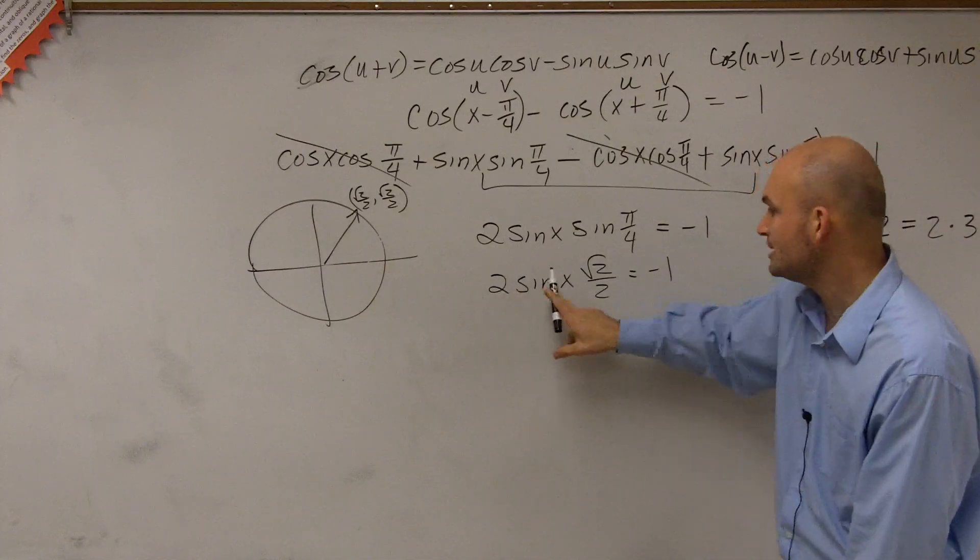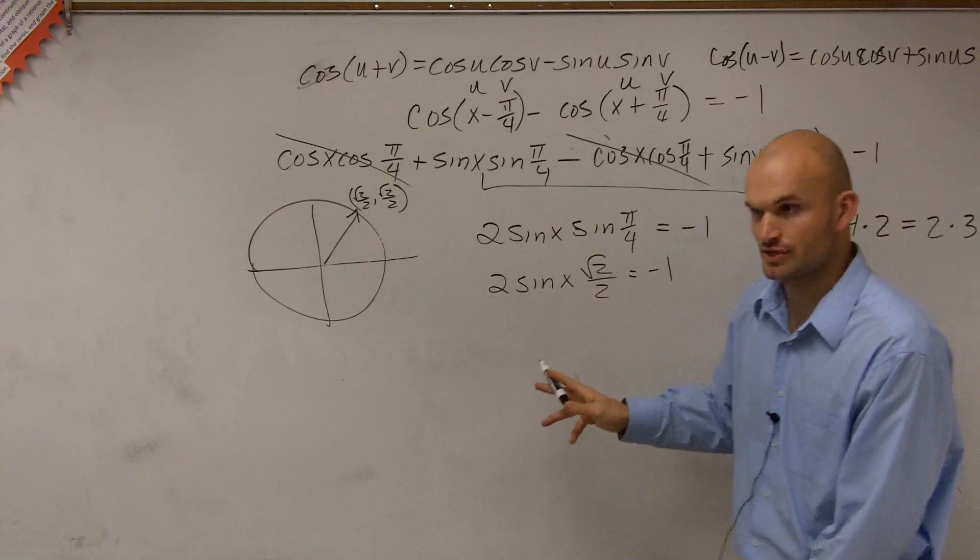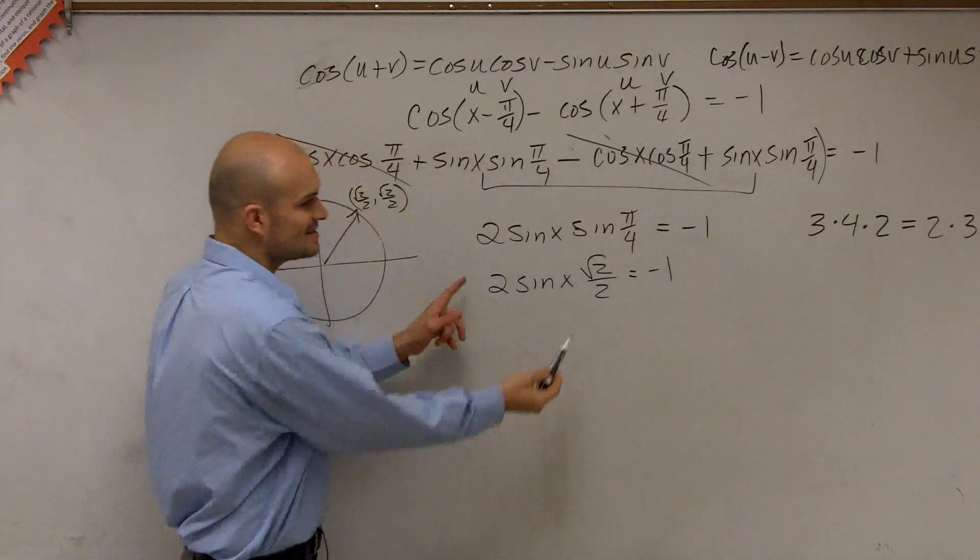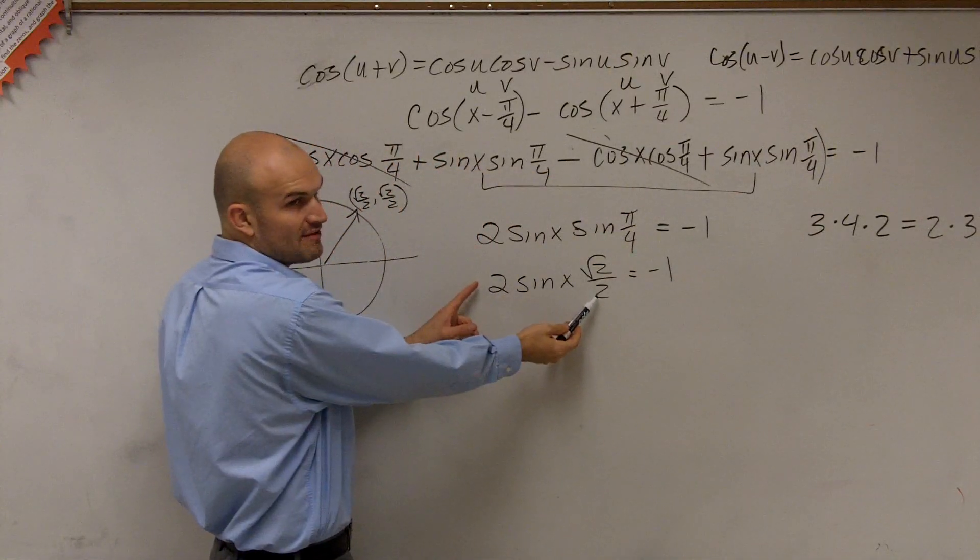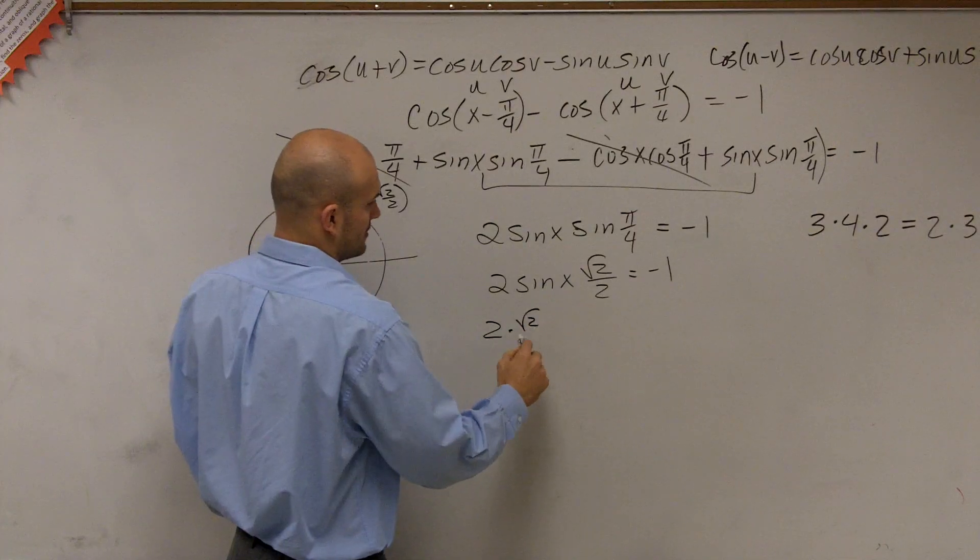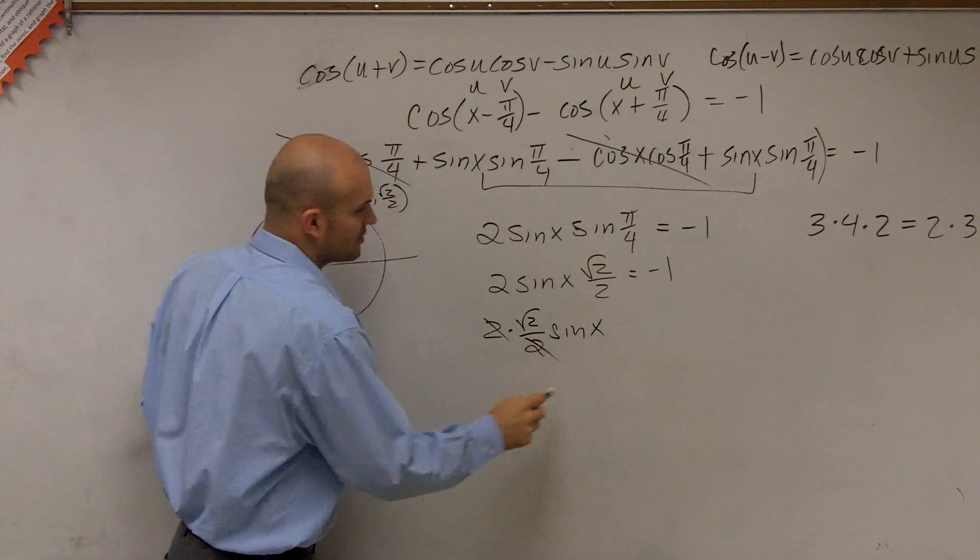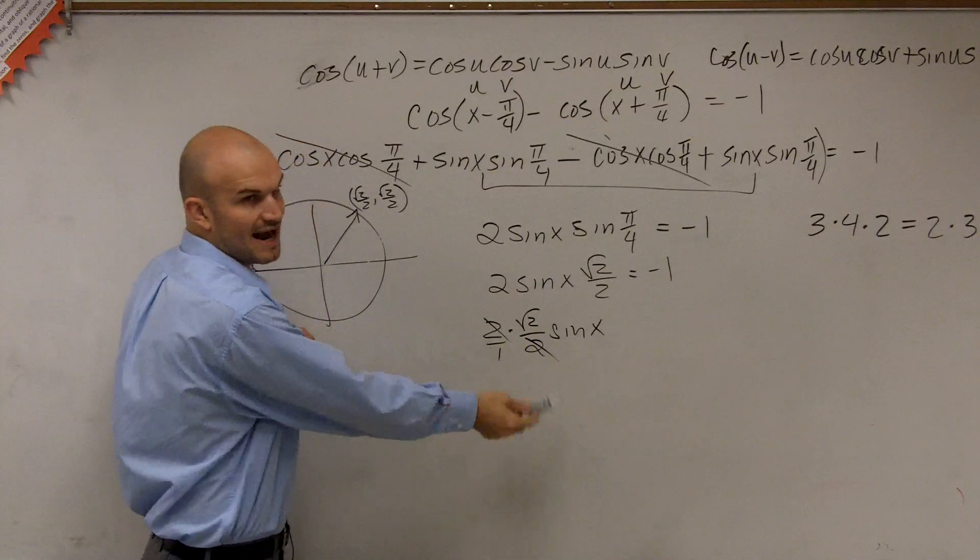So guys, right now I have three terms multiplied by each other. I have 2 times sine times square root of 2 over 2. You guys can see that these 2's are going to divide into 1. But if you don't, just rewrite it. And then what you'll notice is, OK, yes, those do divide into 1.